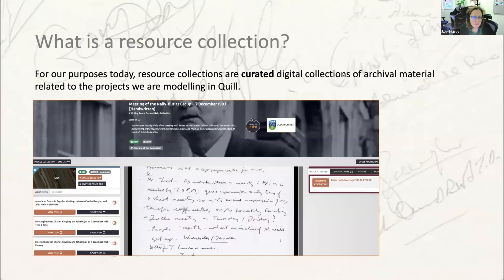So what's a resource collection? Resource collections are curated digital collections of archival material related to the projects we're modeling in Quill. I want to especially emphasize 'curated' here because our collections are selections of material. The degree of curation is going to vary a bit from collection to collection. For example, Quill has partnered with Bowdoin College in Maine to create a resource collection of Senator George Mitchell's papers.